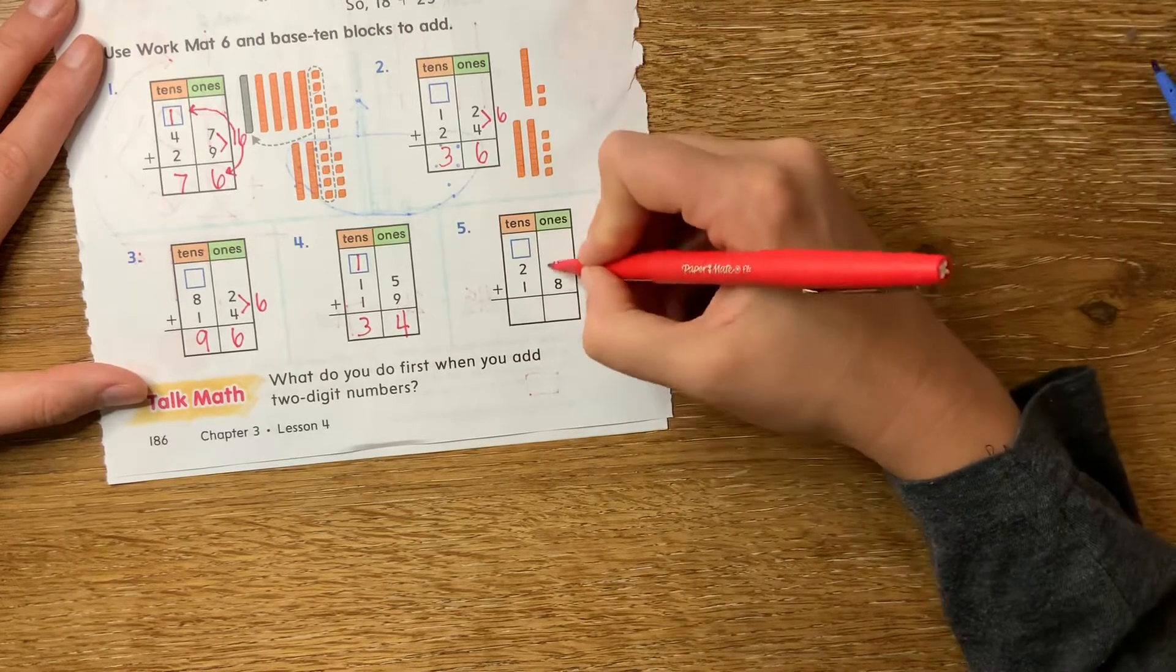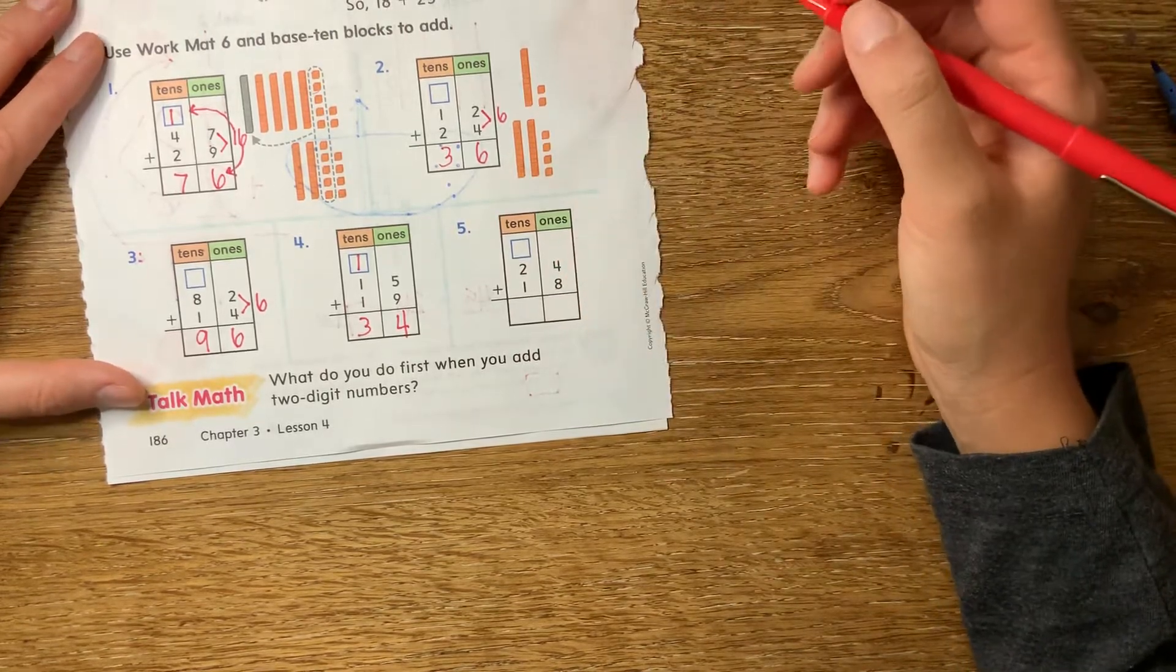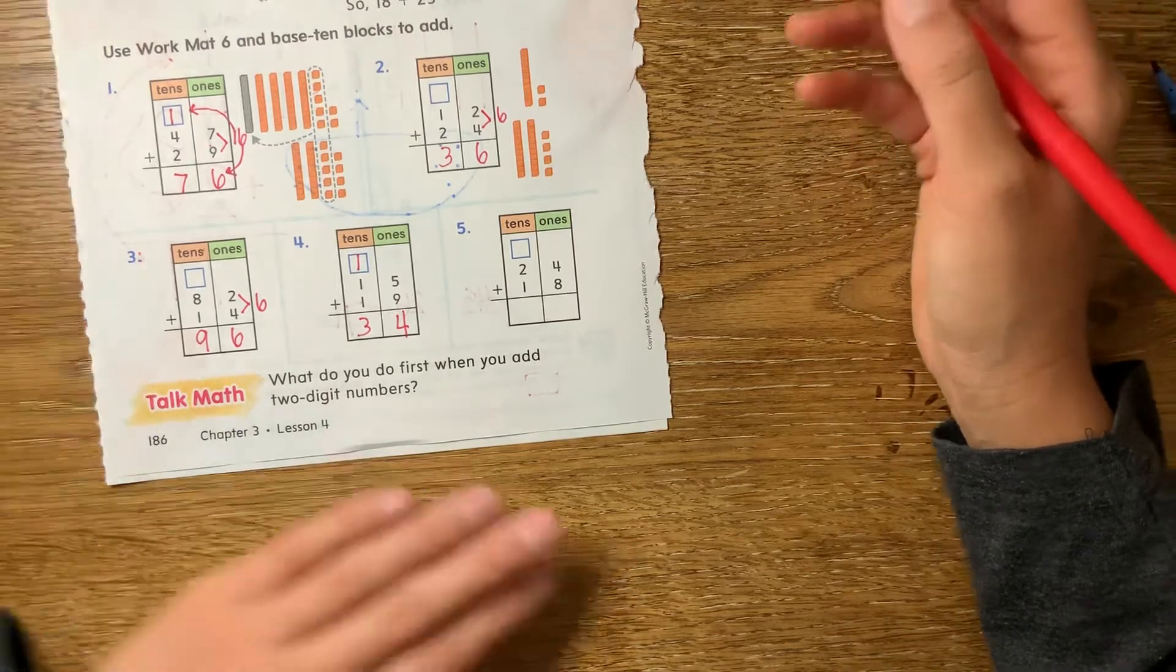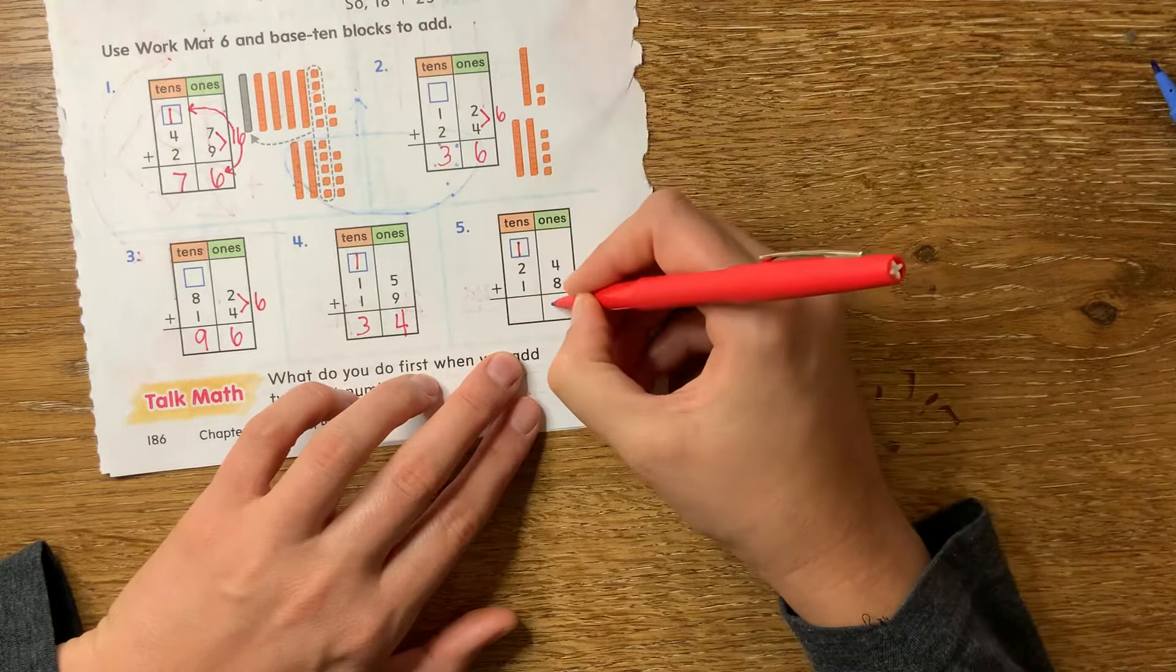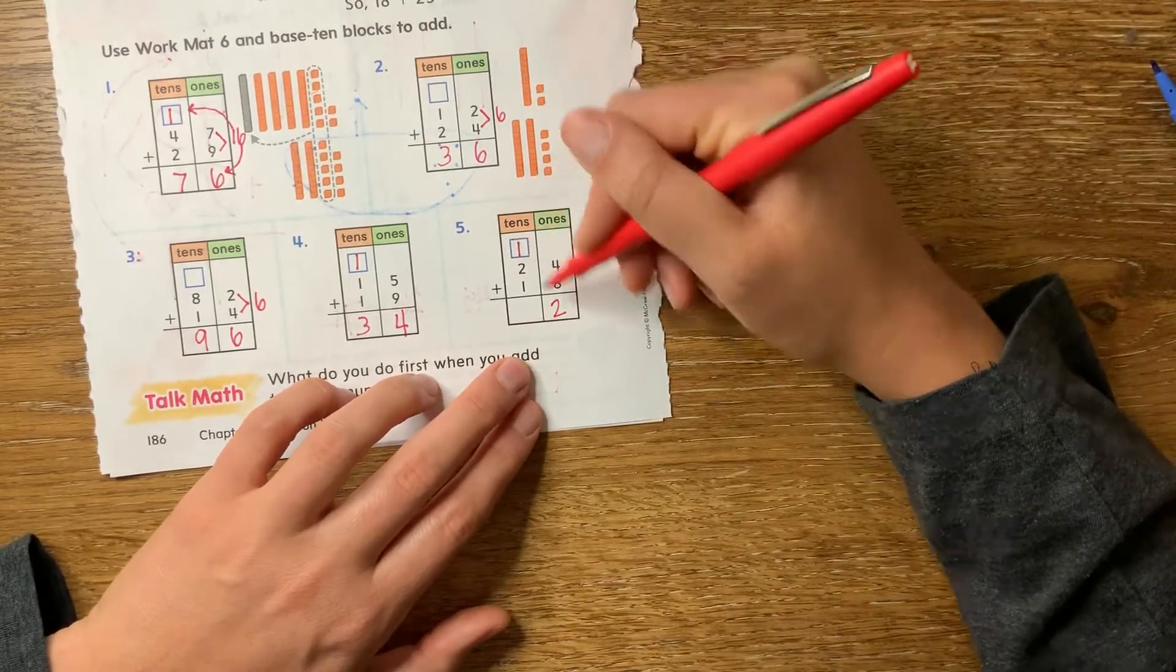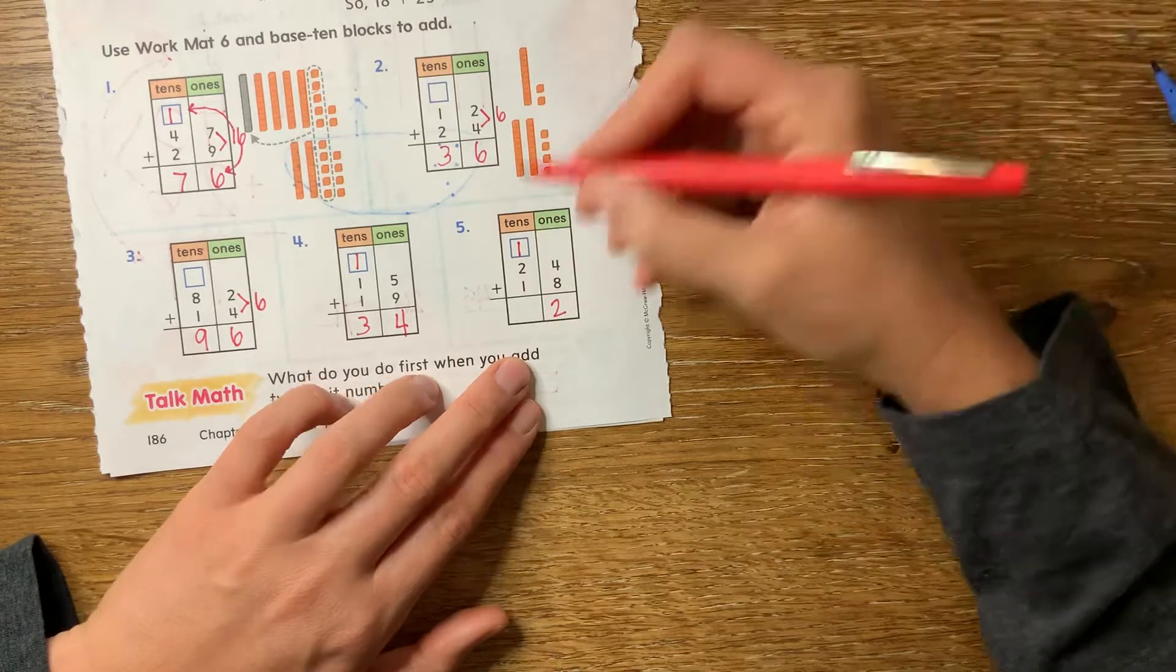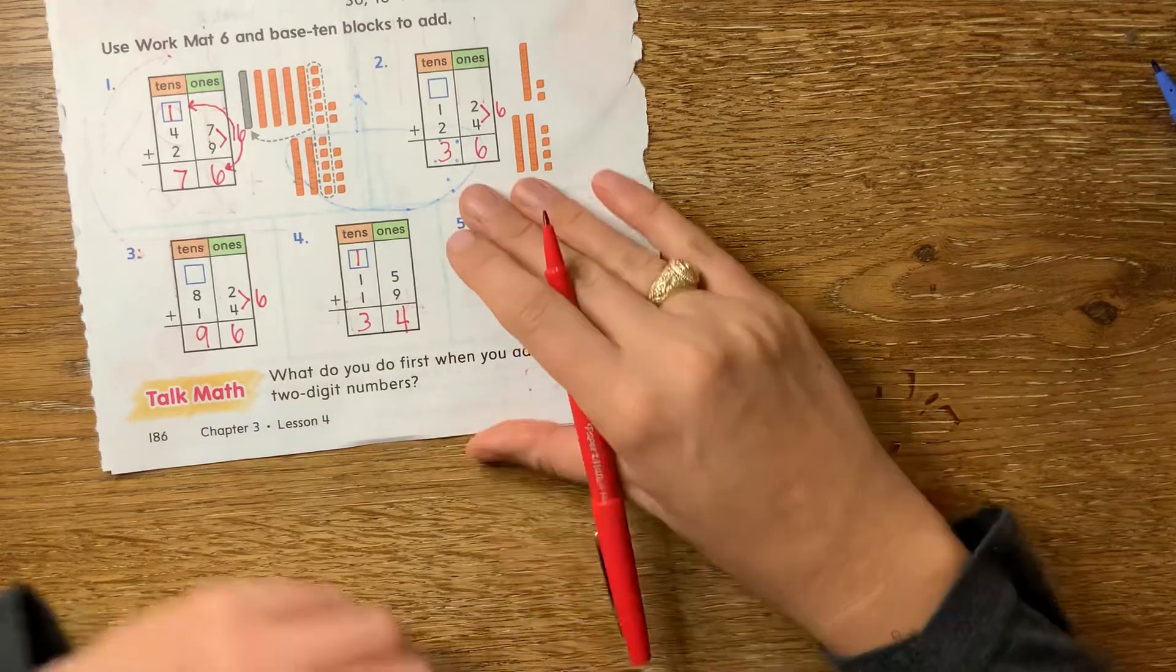Okay. 24 plus 18. Okay. I'm going to add my ones first. Eight ones plus four ones. That equals 12 ones. Uh-oh, that's 10 or more. I'm going to have to regroup. So in 12, there is one 10 and two ones. If I take 10 ones out of 12 and make a 10, there are two ones left over. Now one 10 plus two 10s plus one 10 is four 10s. Okay.